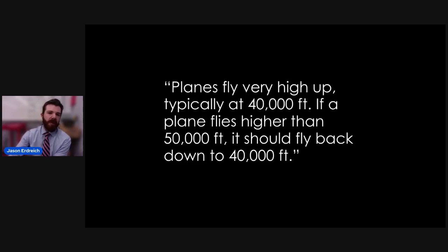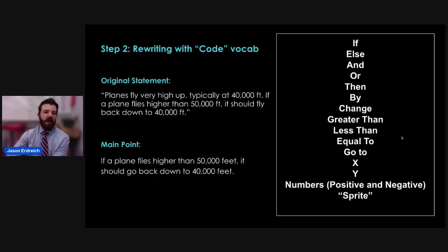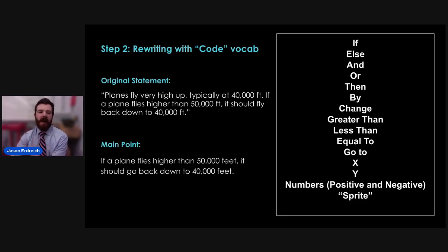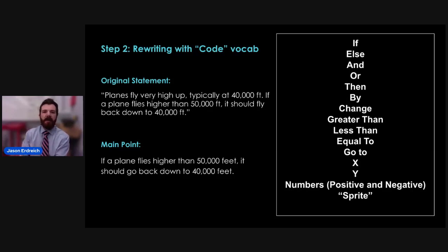The first step to being a computer programmer is to take the original statement and simplify it. What is the main point? The only thing the airplane needs to know is that if it exceeds 50,000 feet, it should go back down to 40,000 feet. Students cut out the grammar and syntax — 'very high up' and 'typically' are not important. How can we simplify our idea and explain it to a computer in the easiest possible way? Then I challenge students to rewrite it using set vocabulary — a word bank — because a computer doesn't know every word you know.